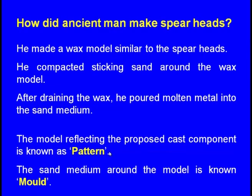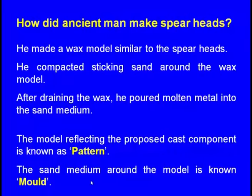He made a wax model similar to the spear heads, compacted sticking sand around the wax model, and after draining the wax, poured molten metal into the sand medium. This is the simple principle of metal casting. The model reflecting the proposed cast component is known as the pattern — technically, even today we call the model used to create the cavity the pattern.